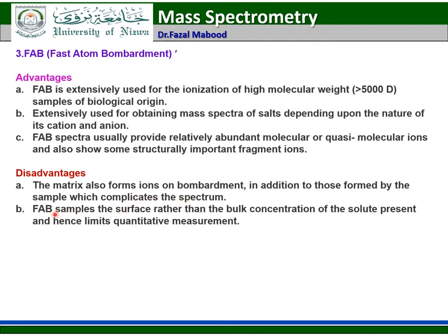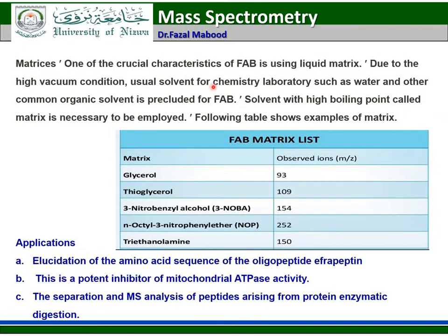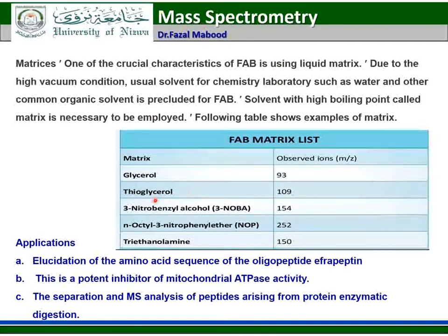One of the crucial characteristics of FAB is using a liquid matrix. Due to the high vacuum conditions, neutral solvents such as water and common organic solvents are not suitable for FAB; solvents with high boiling points — called matrices — must be employed. Matrices include glycerol (for samples with mass-to-charge ratio less than 93), thioglycerol, nitrobenzyl alcohol, octyl nitrophenyl ether, and triethanolamine. An application of FAB is elucidation of the amino acid sequence of peptides such as the protein inhibitor of mitochondrial ATP activity, and separation and mass analysis of peptides arising from protein enzymatic digestion.